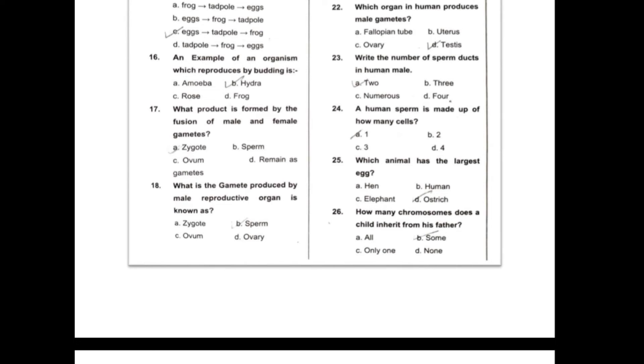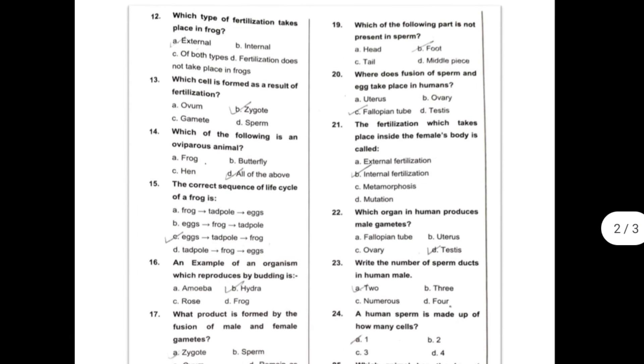Seventeenth, what product is formed by the fusion of male and female gametes? So this can be zygote. Eighteenth, what is the gamete produced by male reproductive organ known as? The answer is sperm.